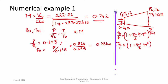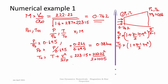For stagnation temperature, we can use the energy equation directly: T₀ = T + V²/(2Cₚ) = 223.15 + (222.22)² / (2Cₚ), which gives T₀ = 247.72 K. Since the flow is isentropic, P₀ and T₀ remain constant throughout, so these stagnation values apply at the exit of the diffuser as well.